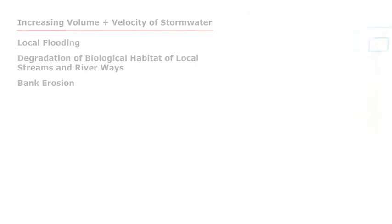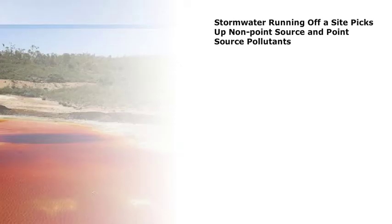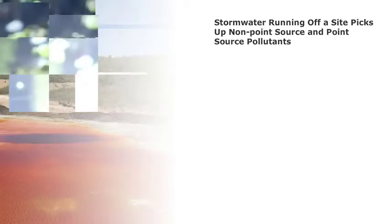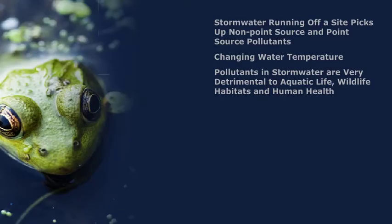There can also be bank erosion and health impacts from reduced infiltration. Reduced infiltration can lower groundwater levels, affecting local drinking water supplies. When stormwater runs off a site, it picks up nonpoint and point source pollutants — things like debris, trash, sediments, oils, grease, pesticides, and other toxic chemicals. It also changes the water temperature. These sediments, temperature changes, and pollutants are very detrimental to aquatic life, wildlife habitats, and human health.